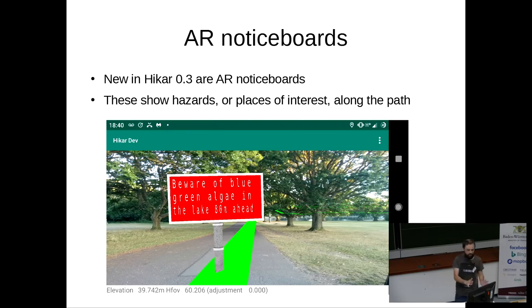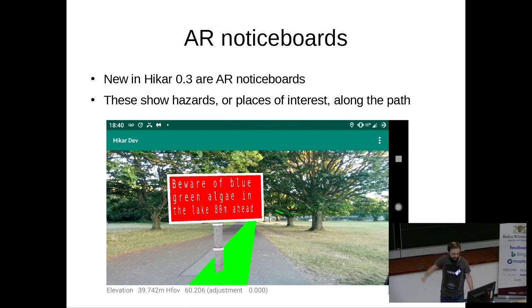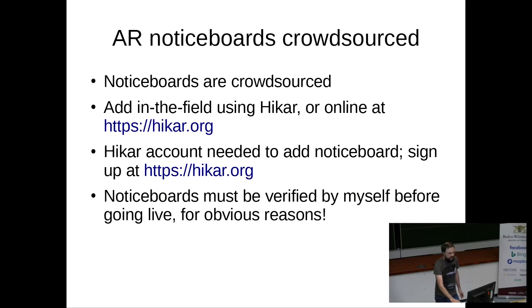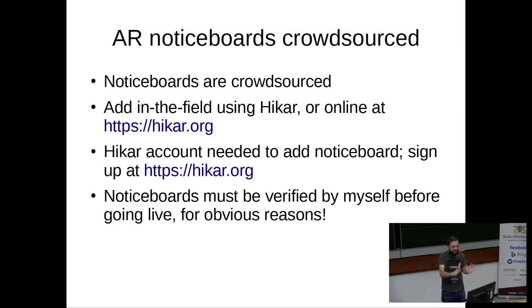The new features in 0.3 include AR notice boards. This is a notice board in Southampton — the lake has a problem with blue-green algae this summer due to warm, wet weather. That is a real notice board showing a real hazard 80 meters ahead. These notice boards are crowdsourced: contributors can add notice boards pointing out hazards or places of interest — steep paths, rock falls, historical sites. You can add hazards at the website hicar.org, though you do need an account to prevent vandalism.